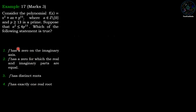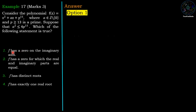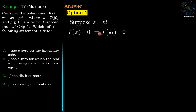This is a problem about zeros of the function f, and we will check all the options one by one. For option 1, we are given f has a zero on the imaginary axis. Suppose z = ki, which is on the imaginary axis, is a zero of f. Therefore f(ki) = 0.